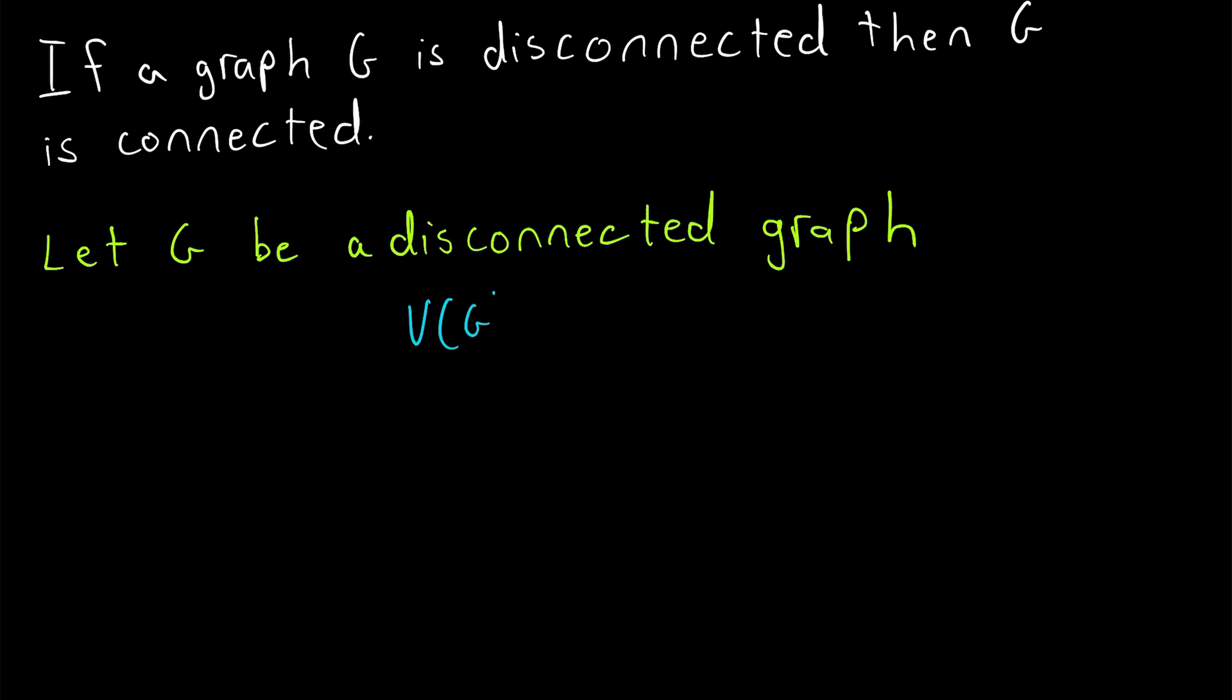Remember that the vertex set of G is equal to the vertex set of G complement by definition of a complement graph. So if we can show that every pair of distinct vertices in G is connected in G complement we will have shown that G complement is connected. That's nice because that means we can just work with the vertices of G and G is a graph we actually know something about.